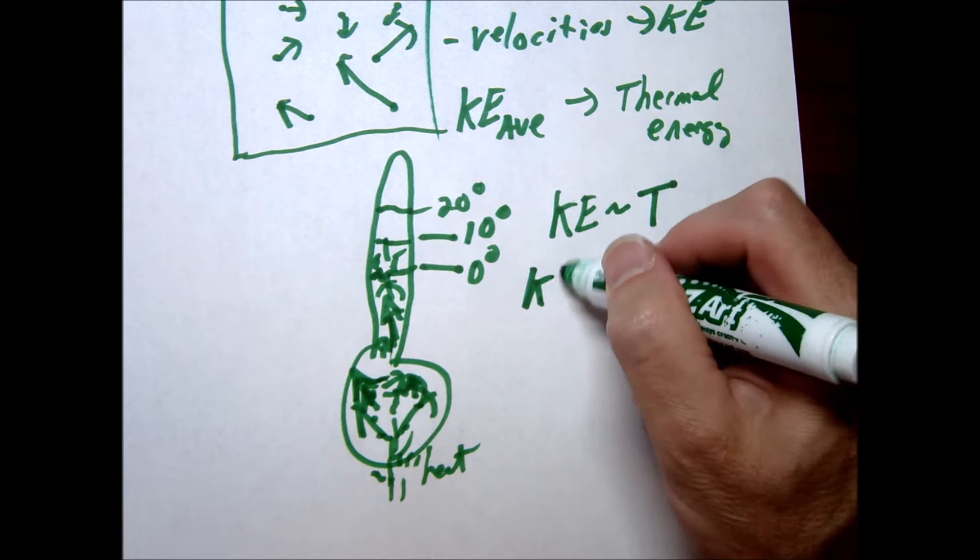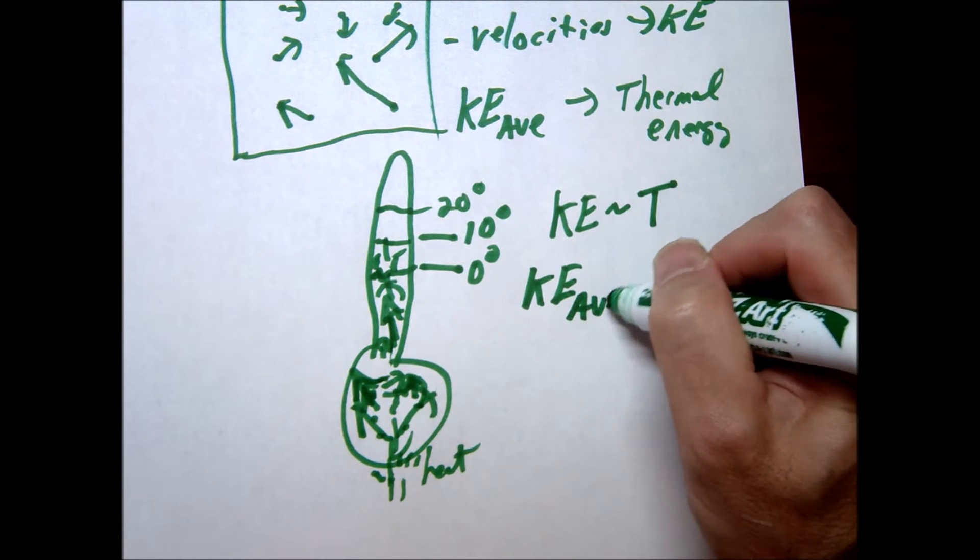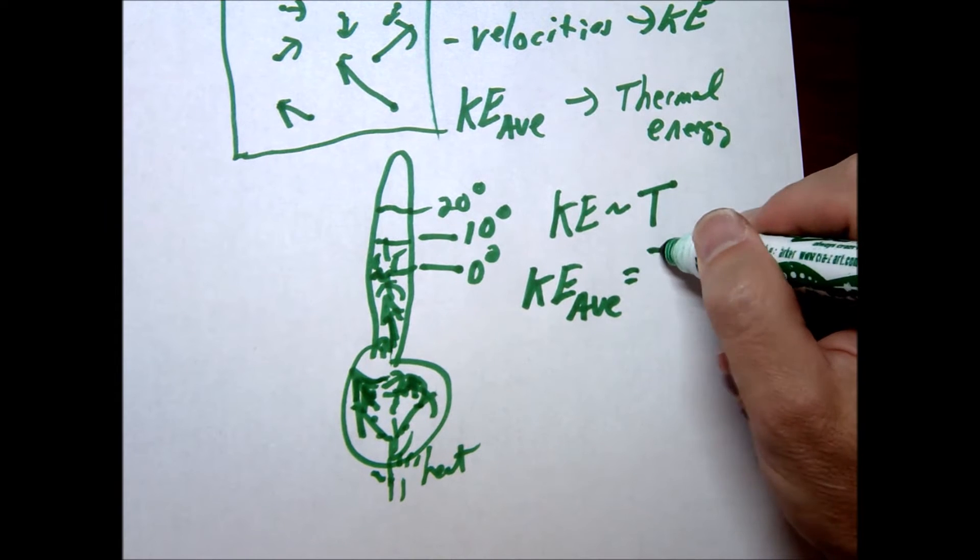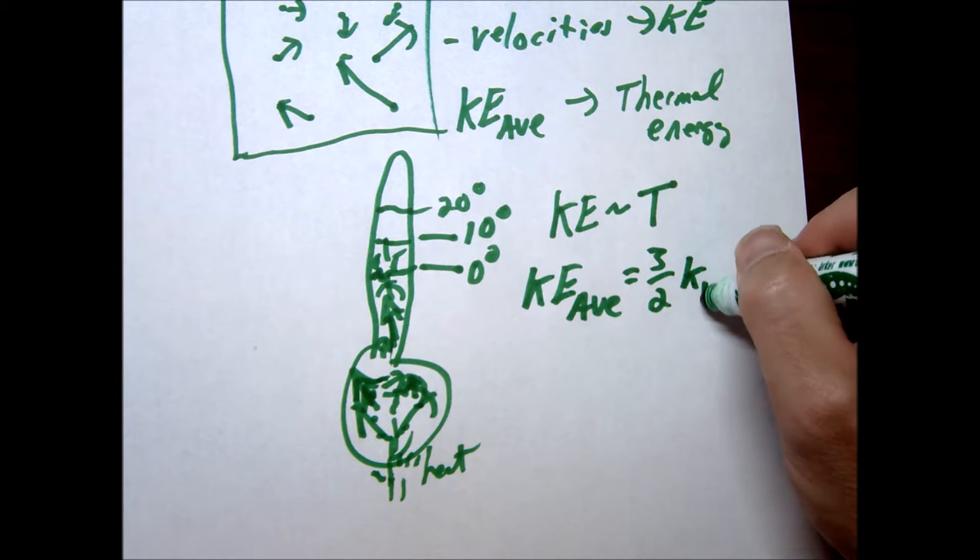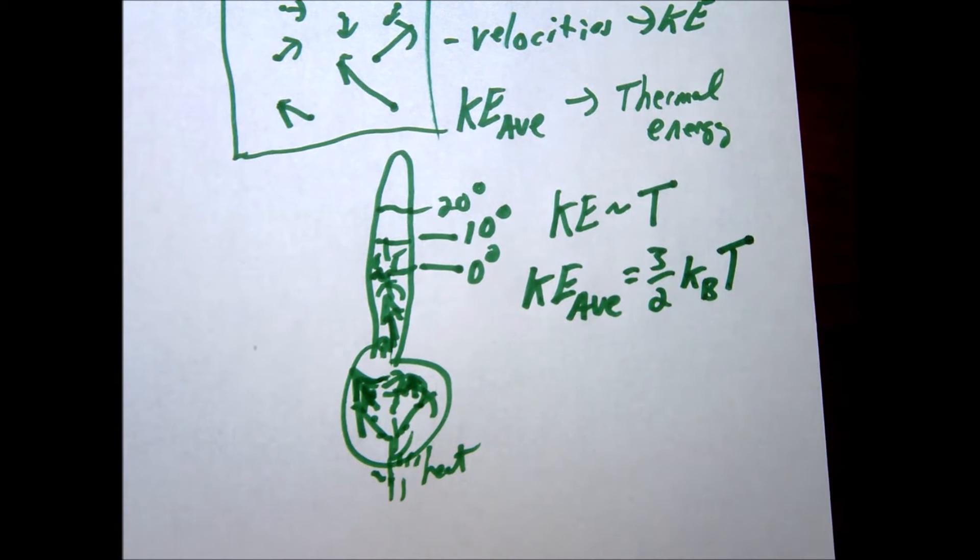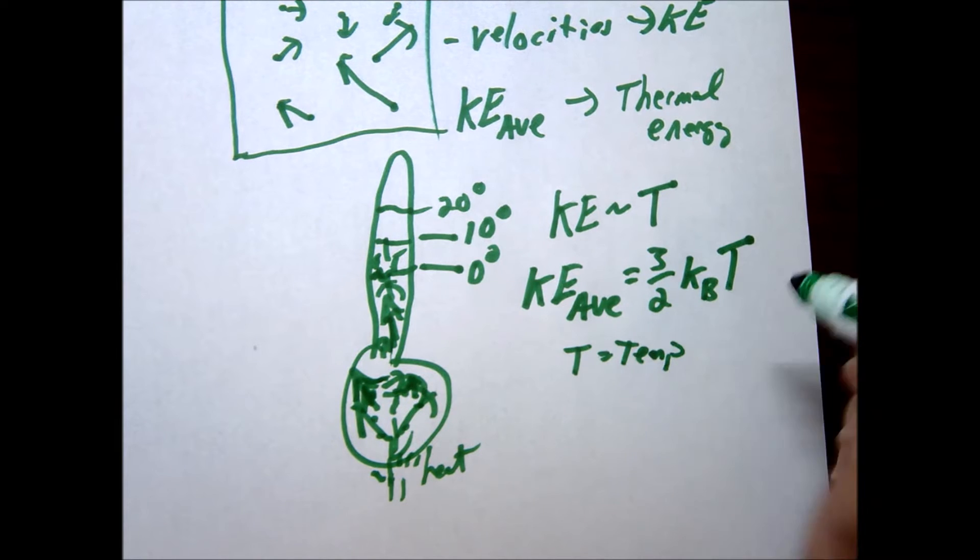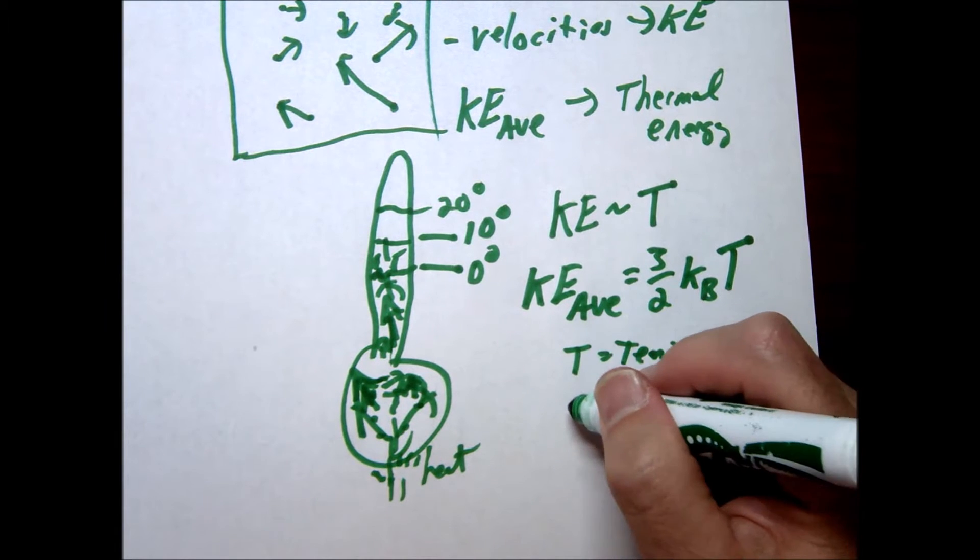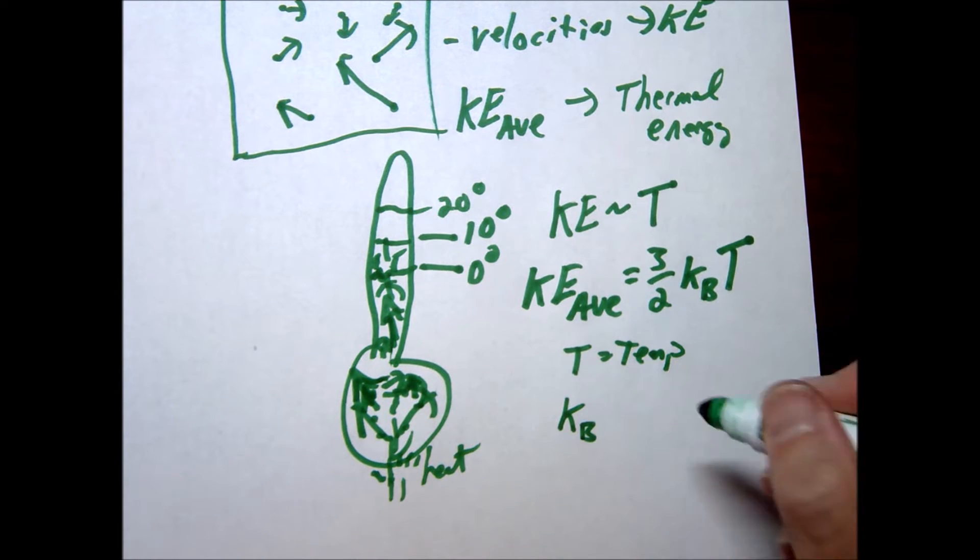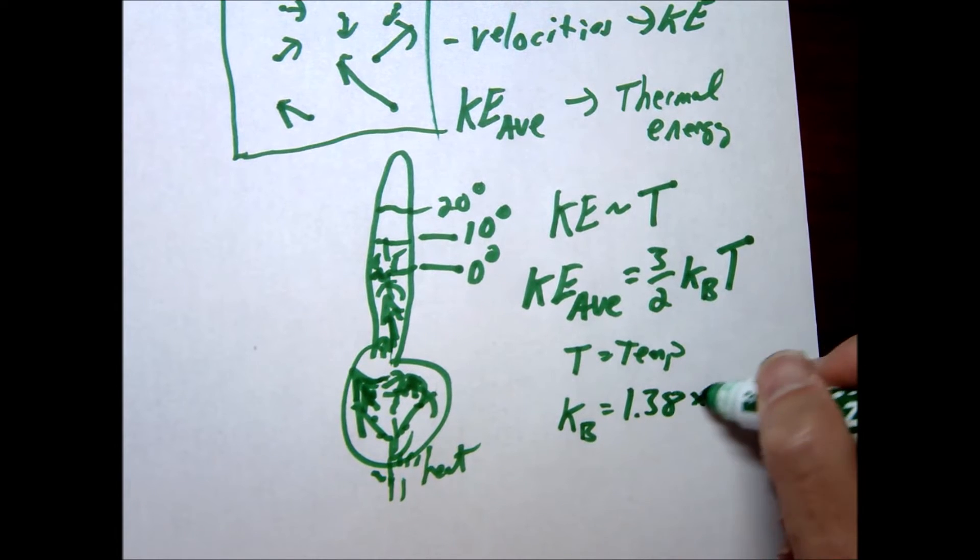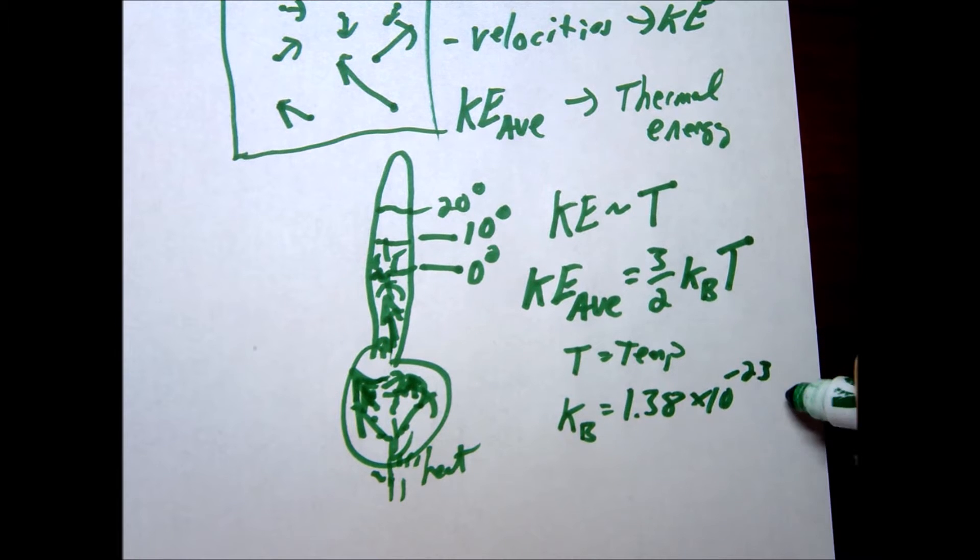In fact the equation for kinetic energy here, this would be an average kinetic energy, this is going to be equal to 3 halves kBT. So notice the proportionality. T is our temperature, and kB is what's called the Boltzmann's constant. And this is just a number, 1.38 times 10 to the negative 23rd joules per kelvin.